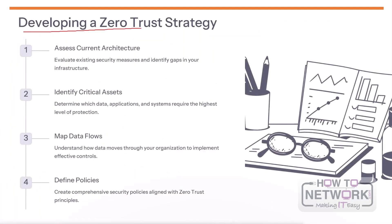When developing a zero-trust strategy, start by assessing your current security architecture and identifying any gaps that need to be addressed. Next, identify your most critical assets — the data, applications, and systems that require the highest level of protection. Understanding how data flows through your organization is key, so map those data flows to implement effective security controls. Finally, define comprehensive security policies that align with zero-trust principles. The aim is to move away from the traditional perimeter-based security model toward a zero-trust approach that verifies every user, every device, and every transaction.